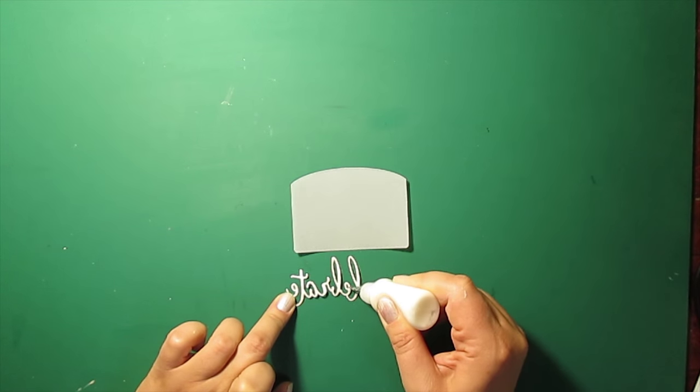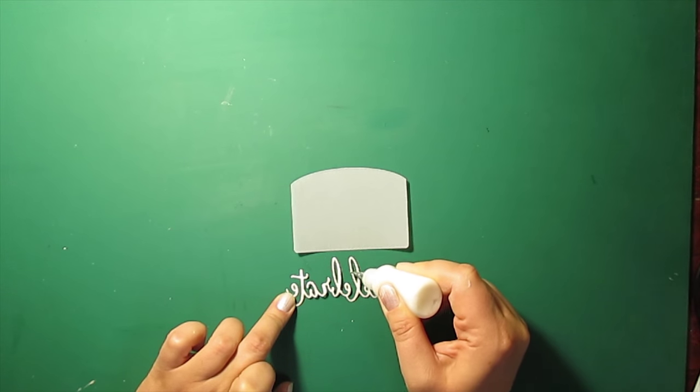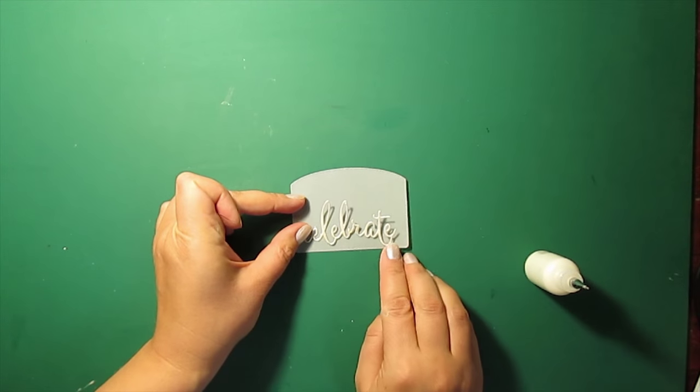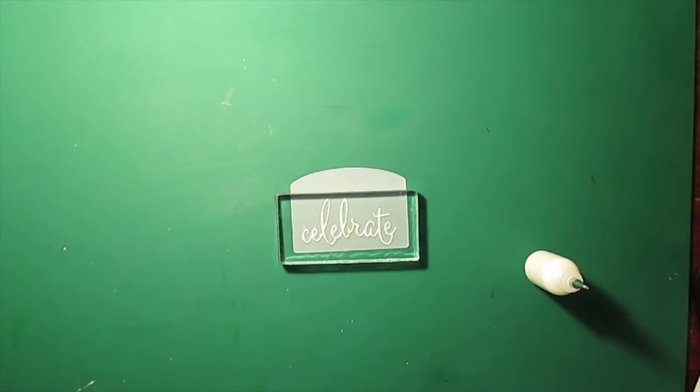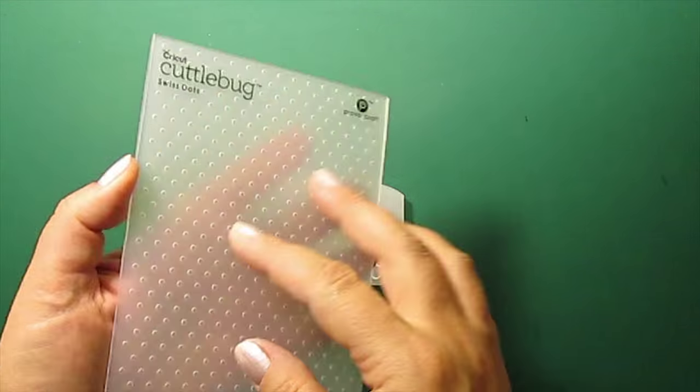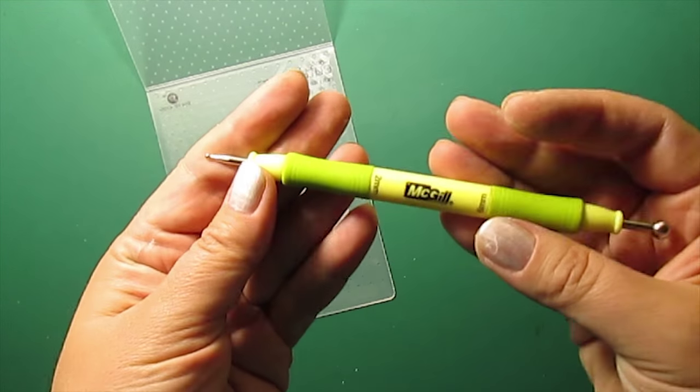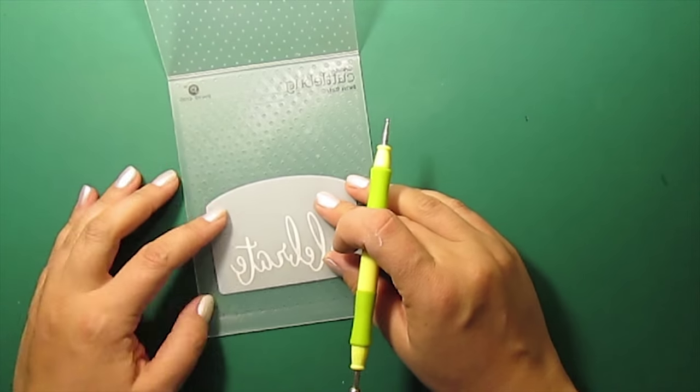To make a pocket for a gift card, I'm gluing the die cut sentiment on a vellum piece. To emboss it, I'll be using my Swiss Dots folder by Cuttlebug and a 2mm stylus.